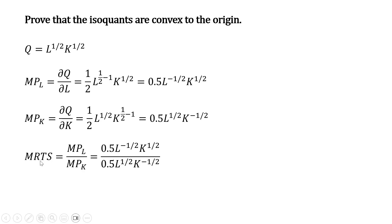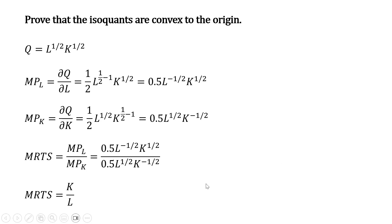We'll form the marginal rate of technical substitution — the marginal product of labor divided by the marginal product of capital. We can clean this up a little bit: the 0.5's cancel, and L raised to the minus one-half divided by L to the one-half is just L in the denominator, and likewise we'll just end up with K in the numerator. So we get our marginal rate of technical substitution: capital divided by labor.